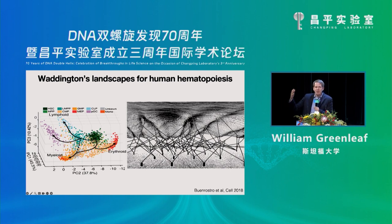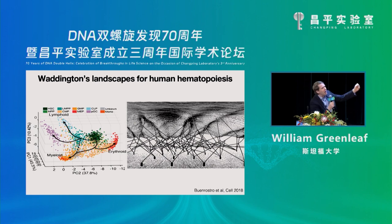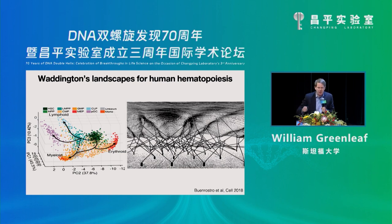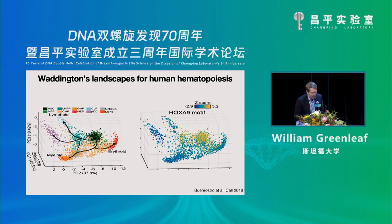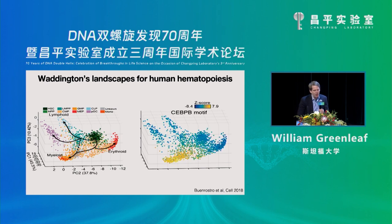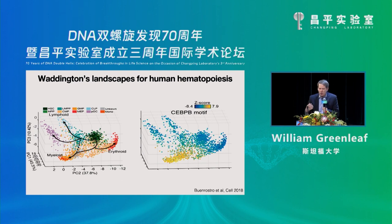Who's seen the next picture in Waddington's book? These are the guy wires that are pulling the landscape, rolling the ball down into different lineage commitments — meant to represent transcription factors binding at different locations and driving gene expression programs that determine cell fate. We can also get a sense of what those transcription factors are doing in single cells by asking about accessibility associated with specific DNA motifs, like HoxA9 high in the HSC compartment, ID3 turning on with lymphoid, GATA, or CEBPβ as a master regulator of myeloid commitment.